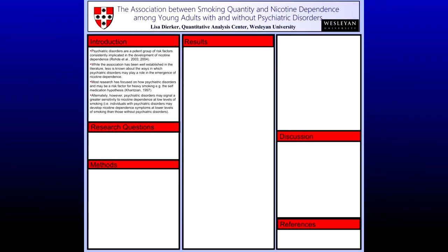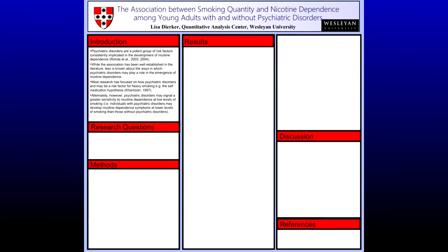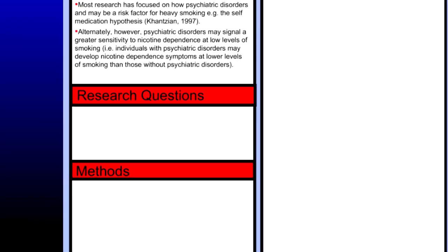At the end of the introduction, or directly following the introduction, we next include our research questions. In our research example, questions include: which psychiatric disorders are associated with nicotine dependence? And secondly, does the association between amount smoked and nicotine dependence differ for individuals with and without a psychiatric disorder?